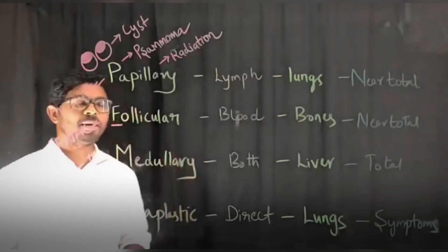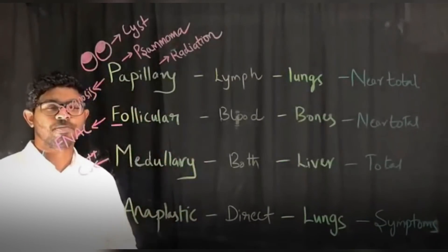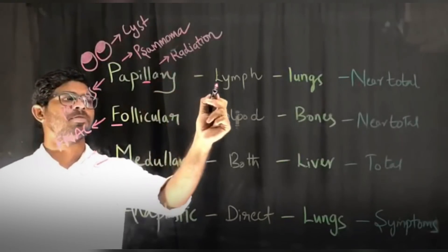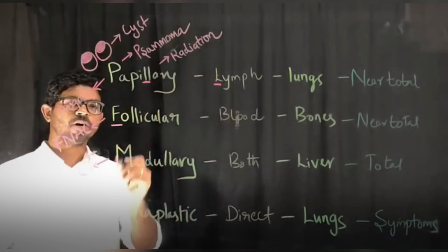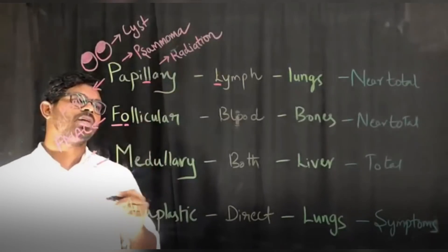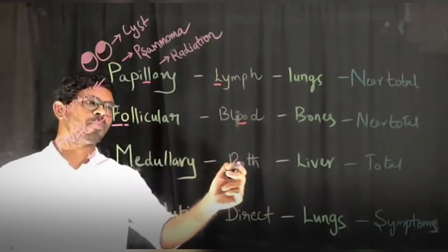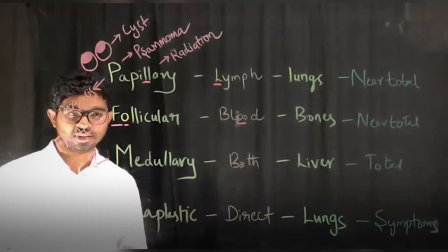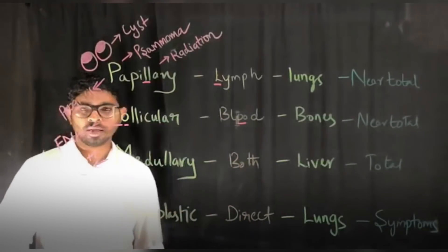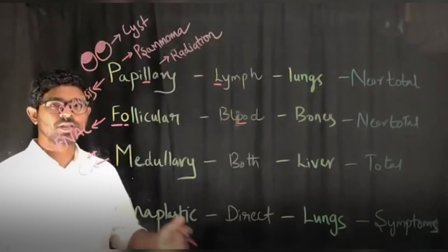The second part focuses on the mode of spread. Papillary has L in it - it spreads by lymph. Follicular has O in it - it spreads by blood. Medullary is by both lymph and blood. Anaplastic is by direct invasion.